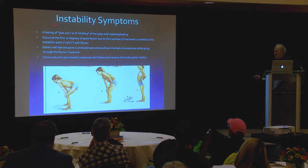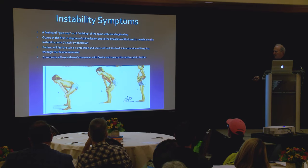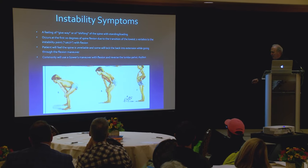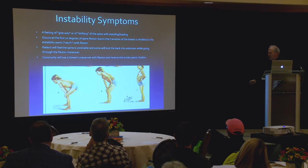Instability is a feeling of give-way or shifting of the spine with standing and loading. It typically occurs at the first 20 degrees of spine flexion due to the transition of the lower two vertebrae. The patient will feel the spine is unreliable, and some will lock the back into extension while going through the flexion maneuver, or use a Gowers maneuver in flexion. Patients trying to get up will do this — the Gowers maneuver was first associated with muscular dystrophy, but patients with bad backs use it all the time.